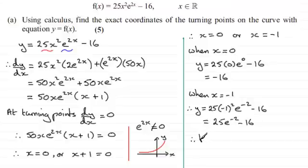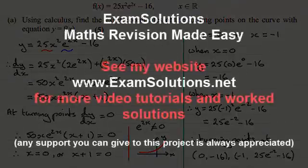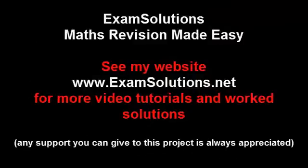in summary, we've got turning points, turning points, and those turning points are going to be at the point where x equals 0, and we found out that y was minus 16. And then the other one was when x was minus 1, we found out that y was 25 e to the power minus 2 minus 16. And there you go.